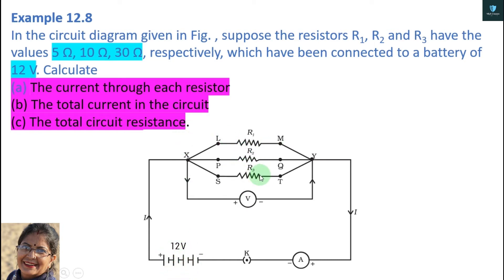There are three resistors: R1, R2 and R3 have the value of R1 is 5 ohm, 10 ohm and 30 ohm. The battery is the value of 12 volt. Now we will solve three different values. The current through each resistor - how much current is in each resistor. The total current in the circuit - how much is the total current.